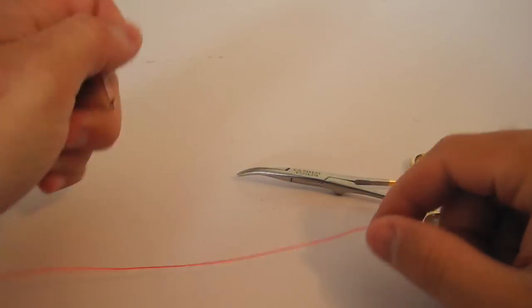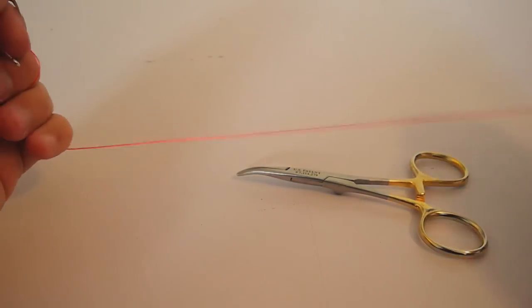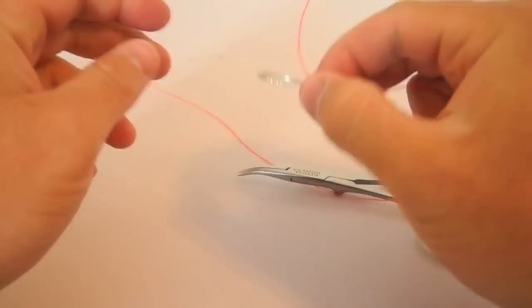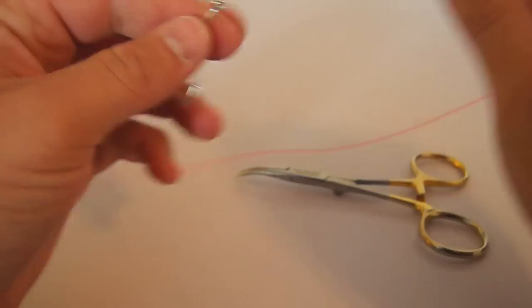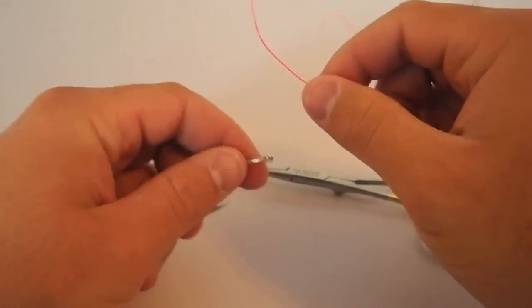So the next thing I'm going to show you is how to take a shortcut and use your hemostats to tie a standard clinch knot. It's kind of a little shortcut that's easier for some guys to do.